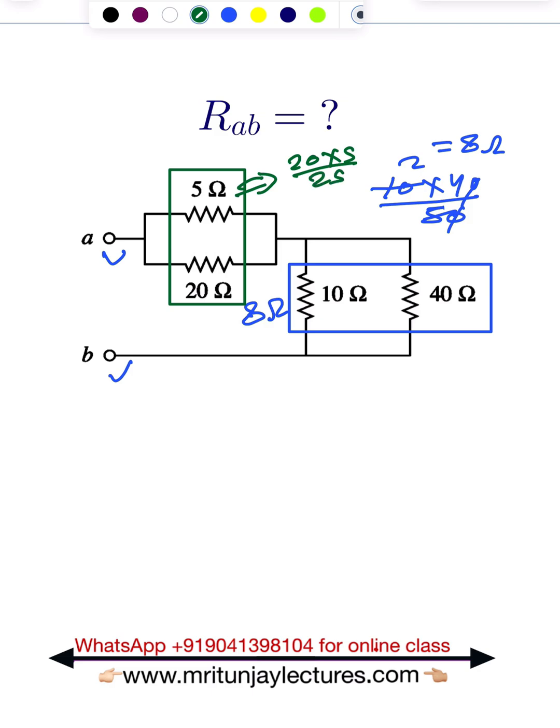Now after that, if you see, look very carefully: 4 ohm and 8 ohm, both are connected in series. So you can say that R of ab is basically 4 plus 8, that is 12 ohm. That's the right answer.